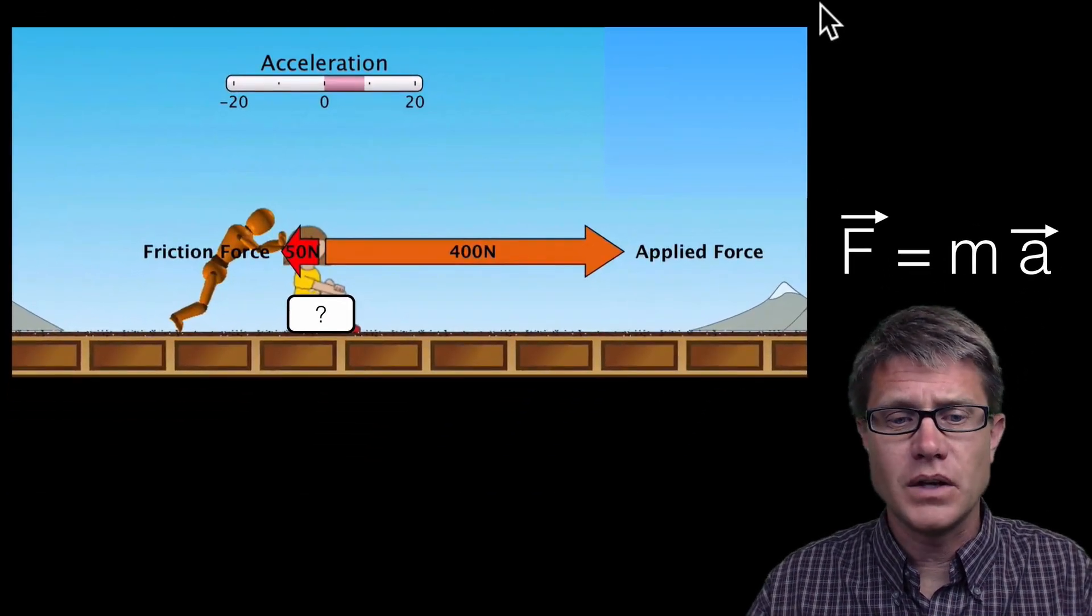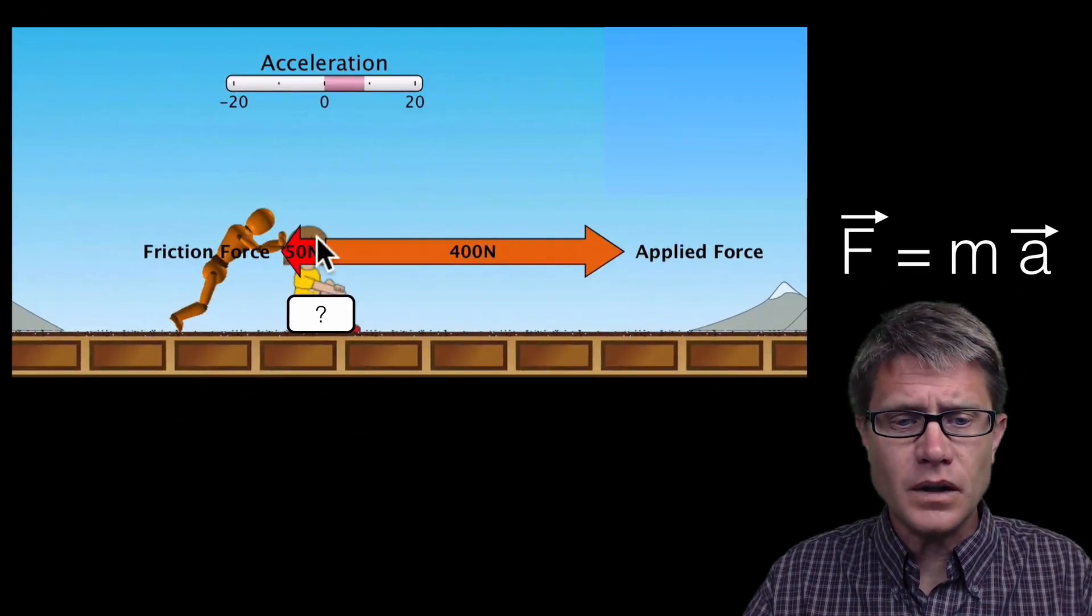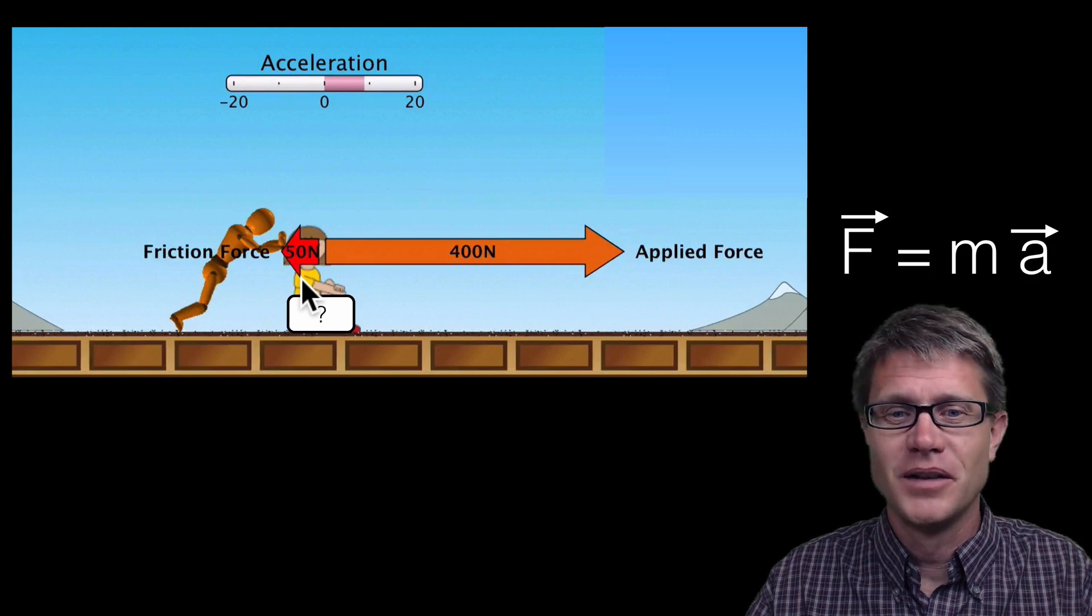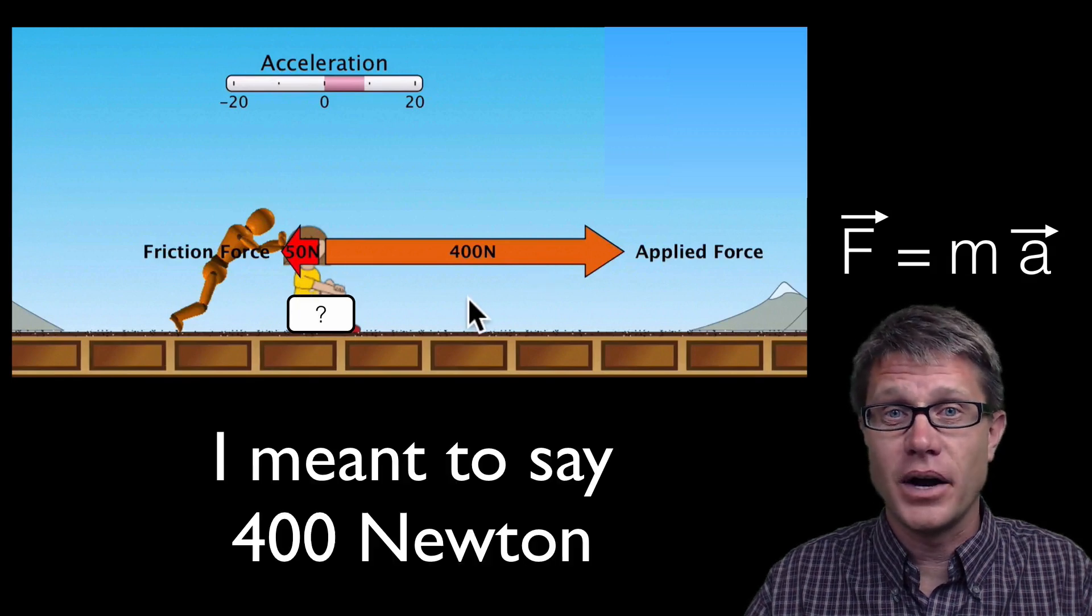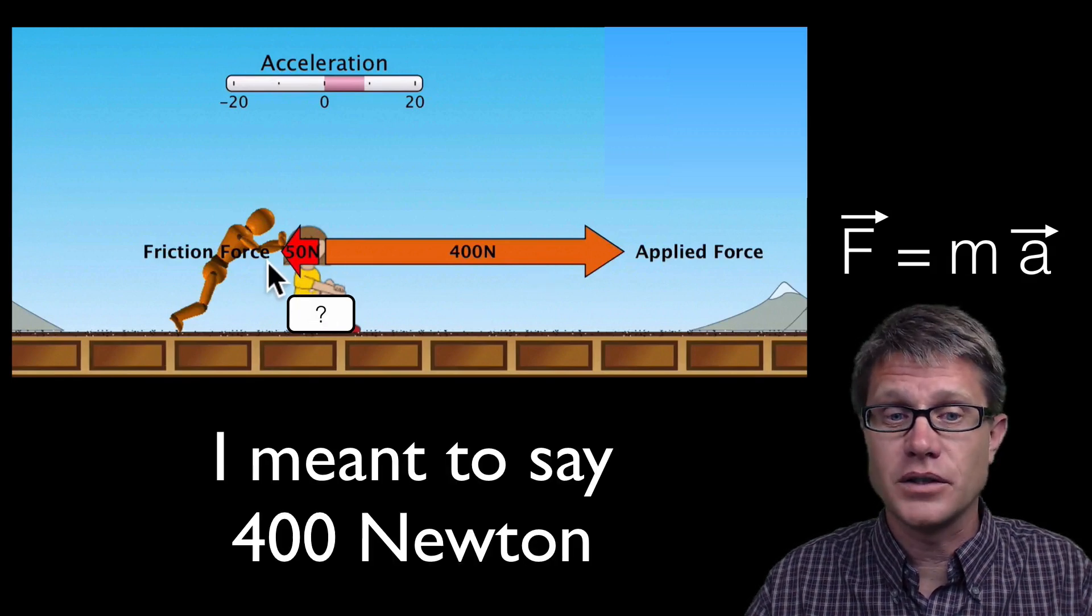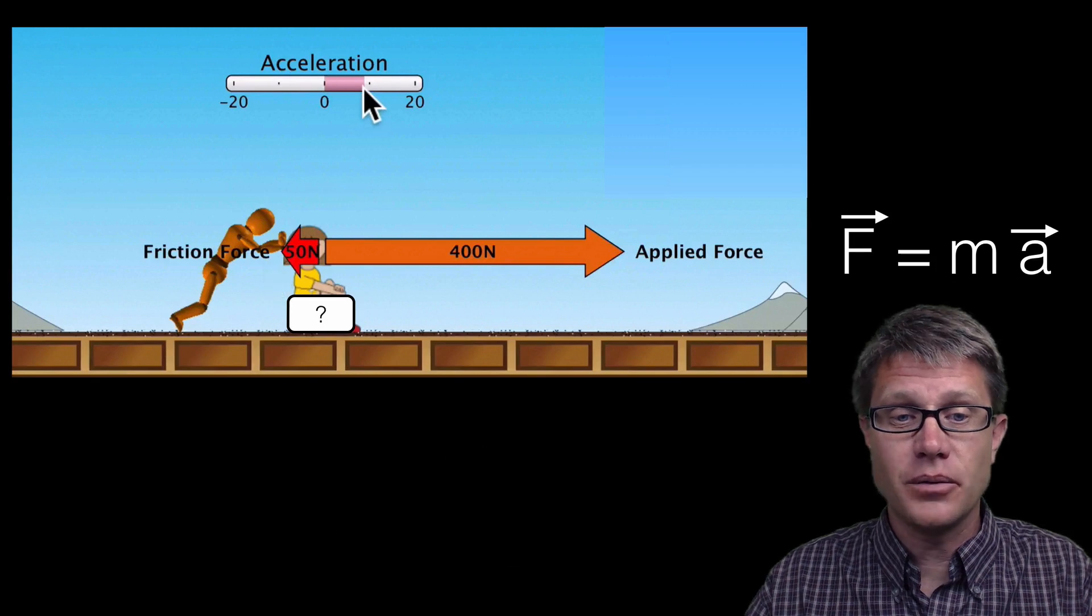Now let me give you a problem. Say in this simulation we have taken a small child and we are going to push that with the robot. So we have a 40 newton force to the right and a 50 newton frictional force to the left. The acceleration is going to be right around 9 meters per second squared.